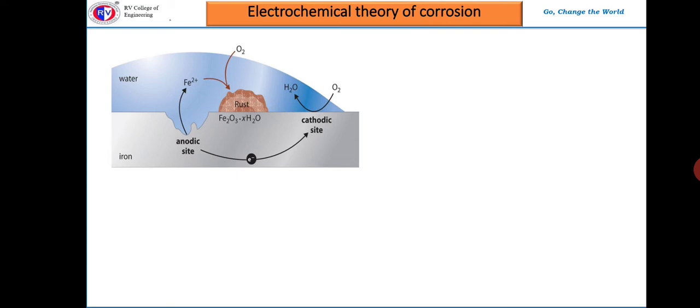Now let us understand electrochemical theory. Whenever a base metal, let us assume iron, is exposed to different oxygen concentration, there will be formation of anodic area and cathodic area.